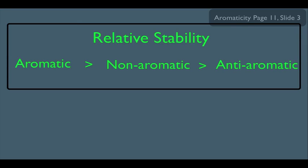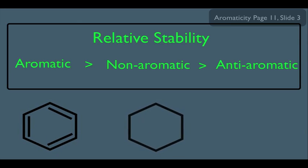We should definitely know these relative stabilities. So a benzene ring would have extra stability compared to, let's say, a cyclohexane, which is non-aromatic, which would be more stable than this anti-aromatic molecule here.